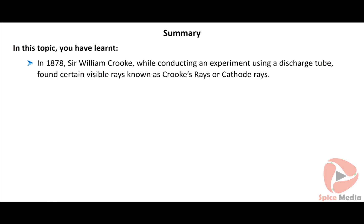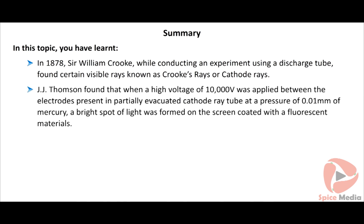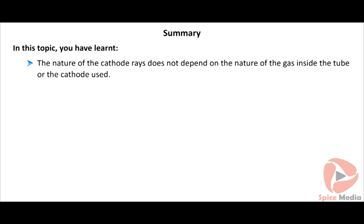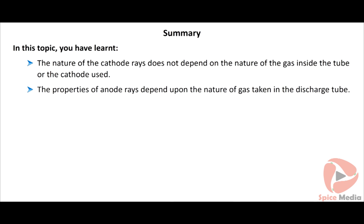Summary: In 1878, Sir William Crookes discovered cathode rays using a discharge tube. J.J. Thompson applied 10,000 volts in a partially evacuated cathode ray tube at 0.01 mm of mercury pressure, forming a bright spot of light on a fluorescent screen. Cathode rays travel in straight lines, are made of small particles with mass and kinetic energy, and are negatively charged. Their nature does not depend on the gas or cathode used. The properties of anode rays depend on the nature of the gas in the discharge tube.